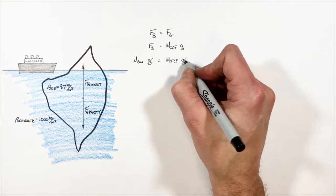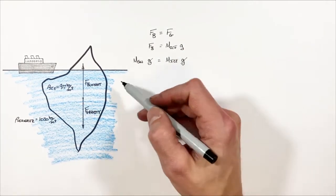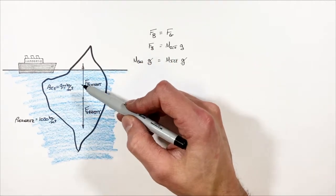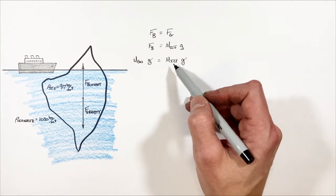And you see the g cancels out. So now we have this simple equation that tells us regardless of the size of this iceberg, the mass of seawater displaced by the iceberg is going to be equal to the mass of the ice.